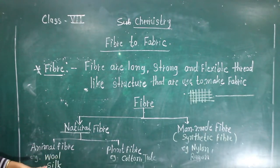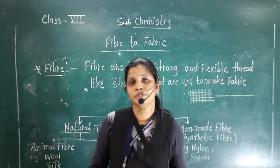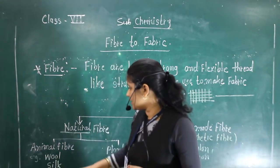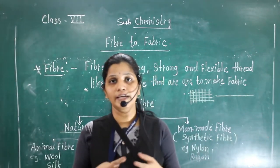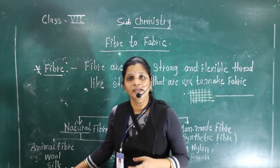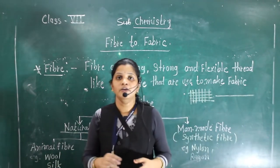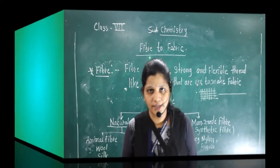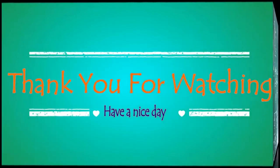In this lesson, fiber to fabric in class 7, we have to learn about animal fiber. First one is wool, and second one is silk. The whole process of how we are getting the wool, and silk, what is the lifecycle of silk, how we get the silk. These all we are going to learn in this lesson. Next class we will continue. Thank you.